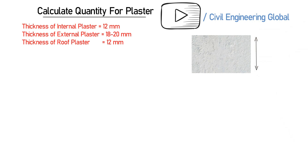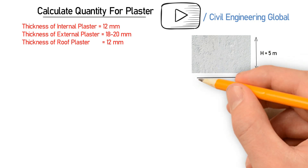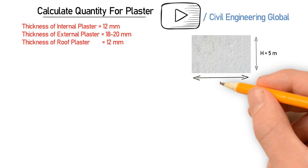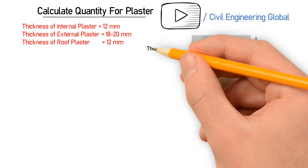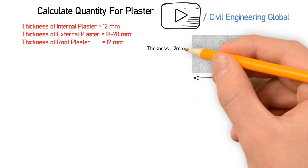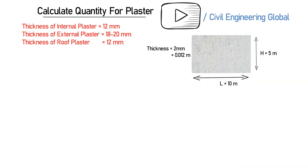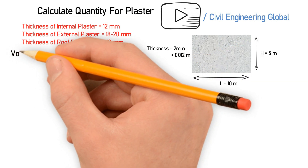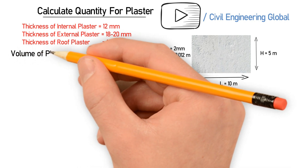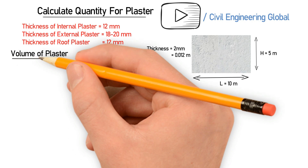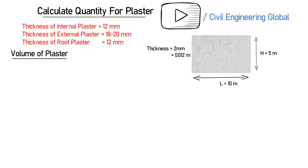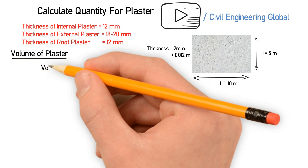The height is 5 meters and the length is 10 meters. The thickness is 12 mm — convert it into meters and you will get 0.012 meter. The volume of plaster is calculated using the formula: length multiplied by height multiplied by thickness.